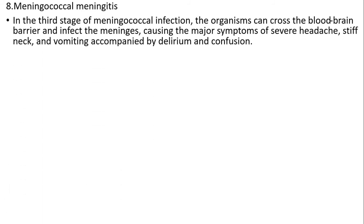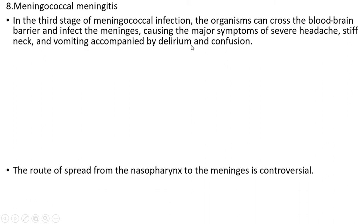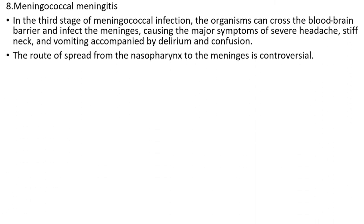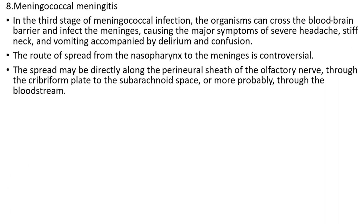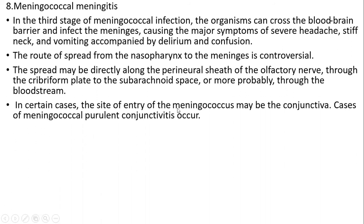Meningococcal meningitis: in the third stage of meningococcal infection, the organism can cross the blood-brain barrier and infect the meninges, causing major symptoms of severe headache, stiff neck, and vomiting combined with delirium and confusion. The route of spread from the nasopharynx to the meninges is controversial, but spread may be directly along the perineural sheath of the olfactory nerve through the cribriform plate to the subarachnoid space, or more probably through the bloodstream. In certain cases, the site of entry for meningococcus may be the conjunctiva.